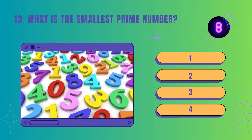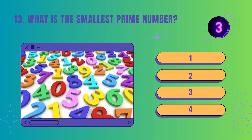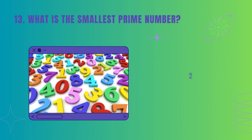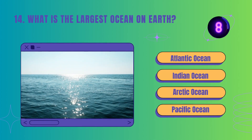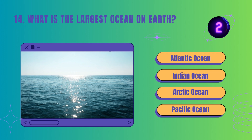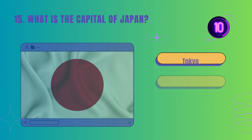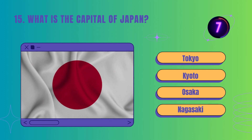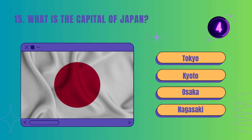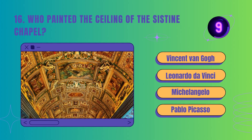What is the smallest prime number? What is the largest ocean on Earth? What is the capital of Japan? Who painted the ceiling of the Sistine Chapel?